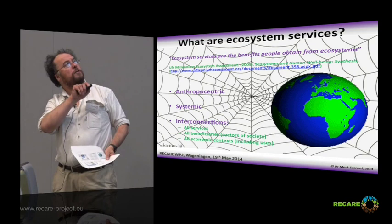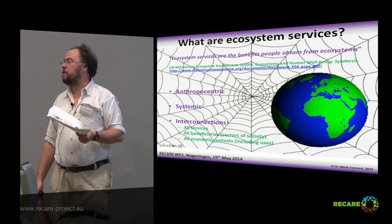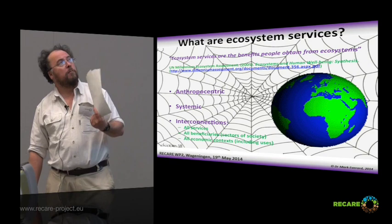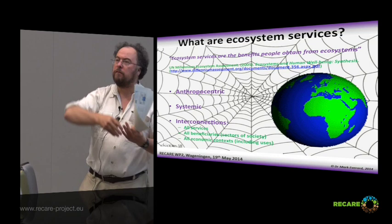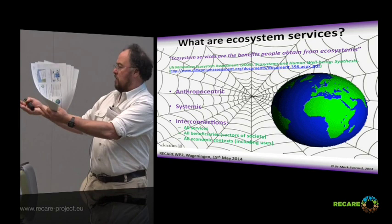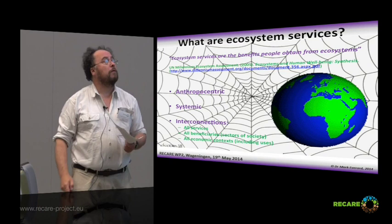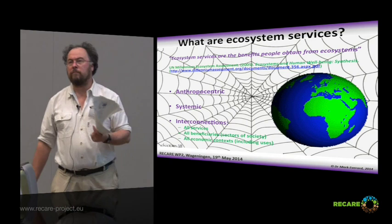So what are ecosystem services? Your classic definition comes from the Millennium Assessment: ecosystem services are benefits people obtain from ecosystems. The first thing we can say is that they're unashamedly anthropocentric — they're not about three-toed sloths. They are systemic, playing on the interconnectedness not just of all the other services, but the fact that each service relates to different sets of beneficiaries. It's important to remember they've got ecological, social, and economic contexts — and I'm using the term economics, not accountancy, because it's not all about the guilder or the euro or the pound or the dollar.